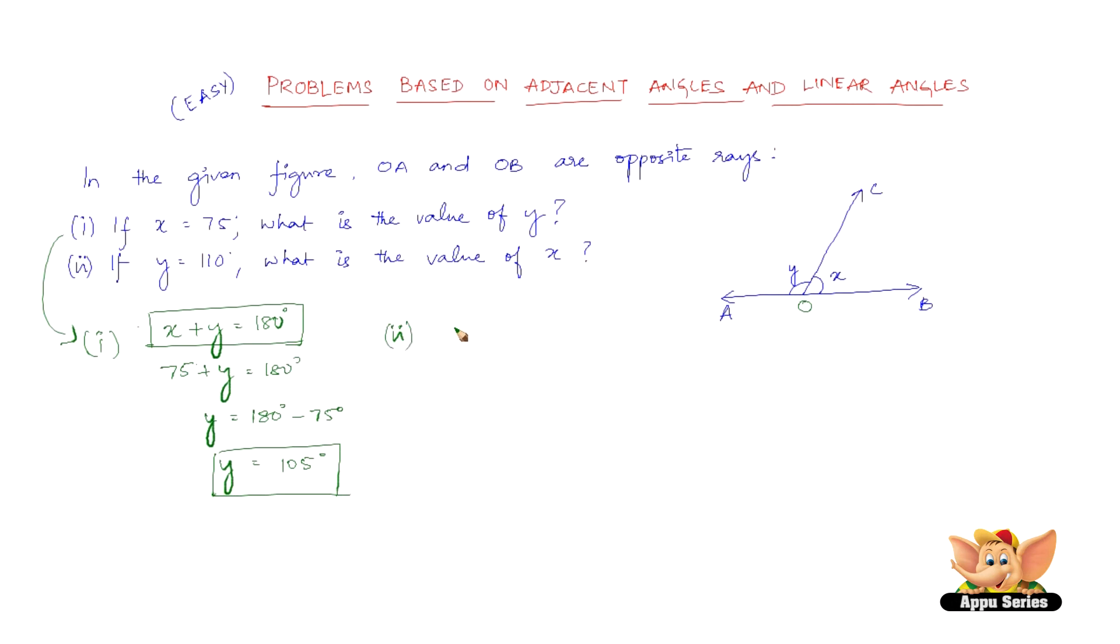The second one is similar. x plus y equals 180 degrees. Now here, if y equals 110 degrees, then x plus 110 degrees equals 180. Therefore, x equals 180 degrees minus 110, so x equals 70 degrees.